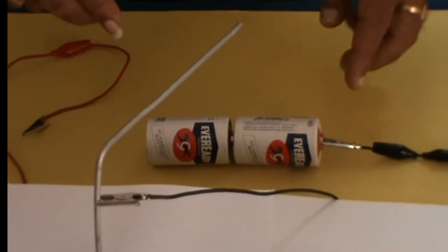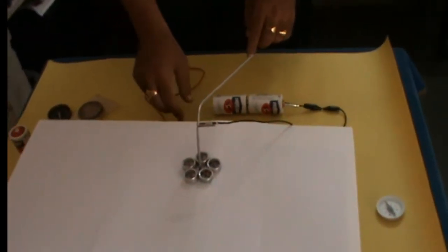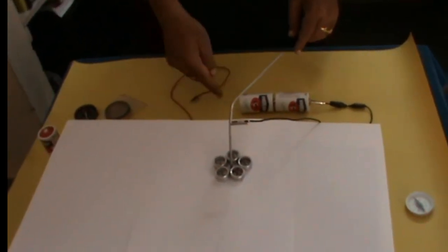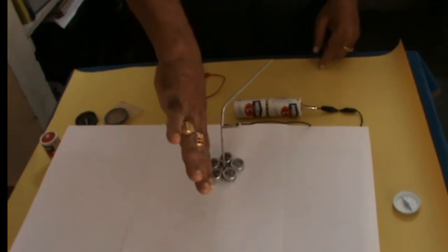To visualize the magnetic field lines, I have taken five magnetic compass needles through which we can visualize the field.